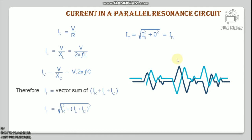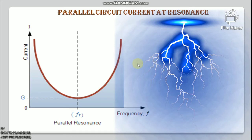Since the impedance at resonance is at its maximum value Z = R, the circuit current will be at its minimum value of V/R. The frequency response curve of a parallel resonance circuit shows that the magnitude of the current is a function of frequency — starting at maximum, reaching its minimum value at the resonant frequency (I_min = IR), then increasing again to maximum.